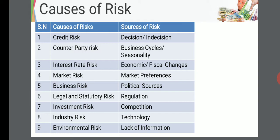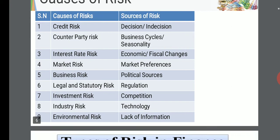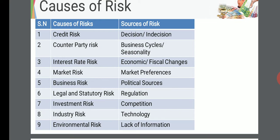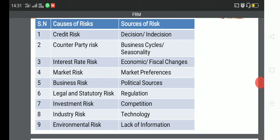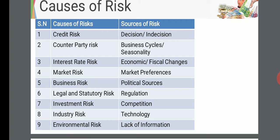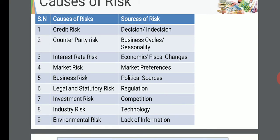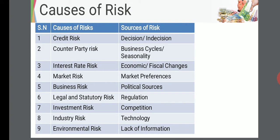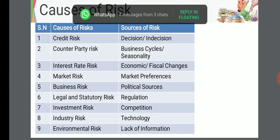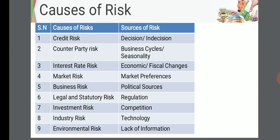Sources of risk: first, decision and indecision — wrong decisions can cause risk, and not taking decisions can also cause risk. Business cycle seasonality: for example, the umbrella business works well in the rainy season but not in other seasons, and that seasonality is also a risk. Economic or physical changes: for example, if the government reduces spending on health in the budget, that causes changes and risk in the health sector. Market preferences: if market preferences change, that is also a source of risk.